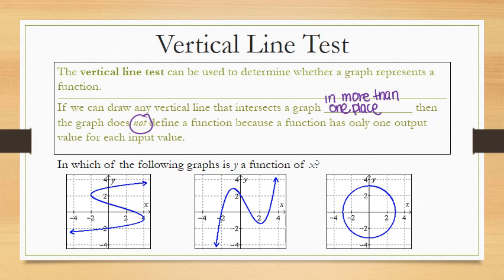Let's see what I mean by this. For example, in which of the following graphs is y a function of x? So looking at that first graph, if I draw a vertical line right here, and again this said drawing any vertical line, you can see this graph intersects or this line intersects the graph in three different places. So since it intersected at more than one place, we are able to say that this is not a function.